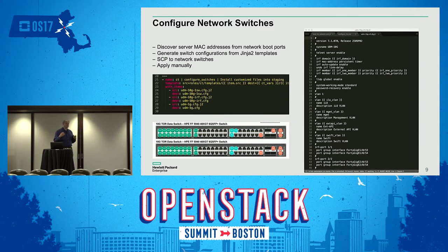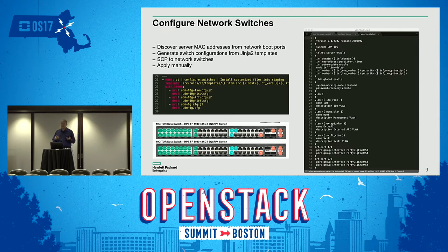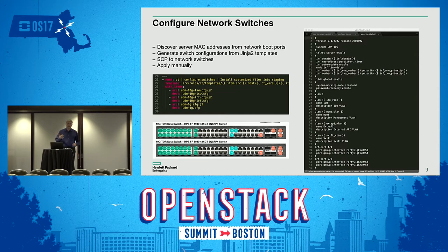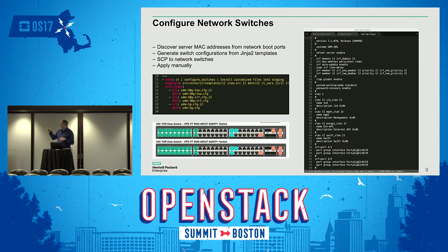I wanted to take a pair of 10-gig switches and be consistent with how servers were connected into them, using templating for the configuration files. Looking at the bottom left of the slide, I made it a requirement to wire these the same way every time through the factory. We could have a variable number of object servers as well as Swift proxy, account, and container servers. I generated configurations for both IRF mode — where the two switches are linked together in high availability — and for keeping them distinct.